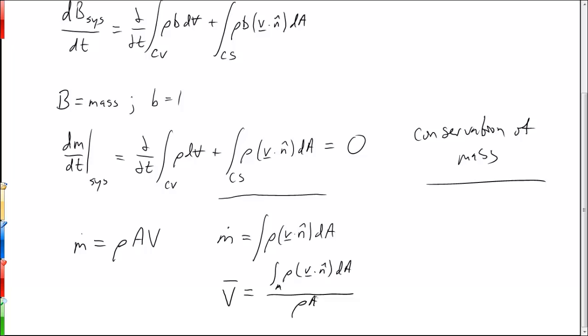If the velocity is constant across this area as well, for uniform velocity, then of course the v just comes outside the integral once again and we see that the average velocity is just equal to the uniform velocity v.